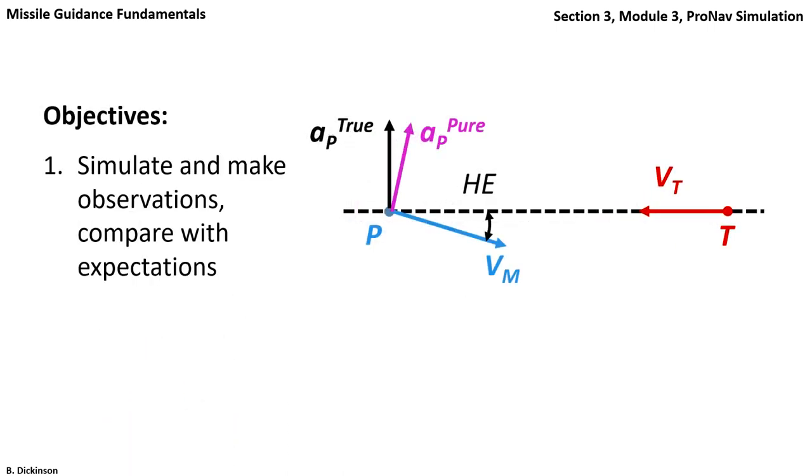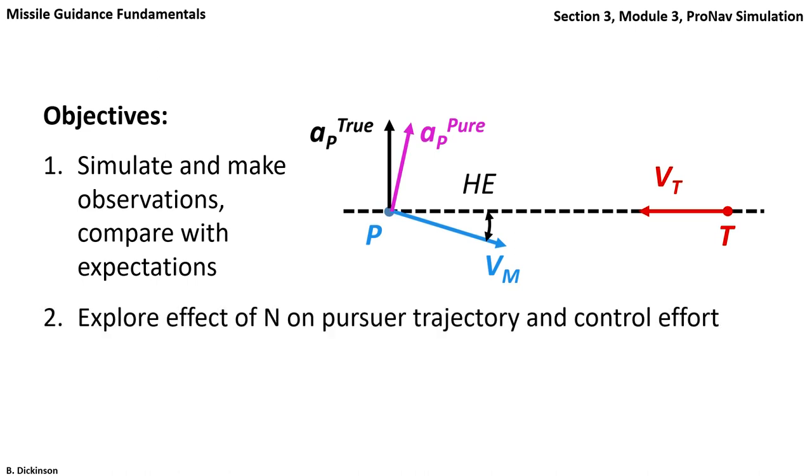Our first objective is to make some observations between the pure and true ProNav results and compare those with our expectations. Then we want to explore the effect of different navigation gains on pursuer trajectory and how much control effort is used.